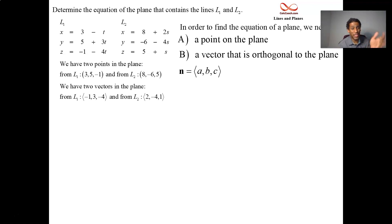What do we choose? Well, when it comes to the point, we have two to choose from. Just pick one. The point could be 3, 5, negative 1, or it could be 8, negative 6, 5. When it comes to the vector, we can't just pick one of these two guys. These vectors are in the plane. We want a vector that is orthogonal to the plane. Orthogonal to every vector that's in the plane. In particular, orthogonal to these two vectors. How do you get a vector that's orthogonal to two given vectors? You take the cross product.